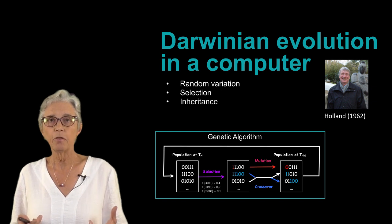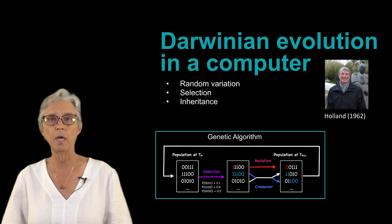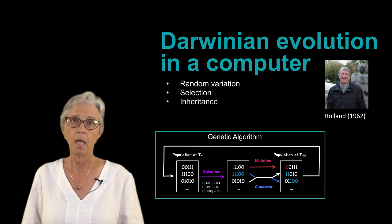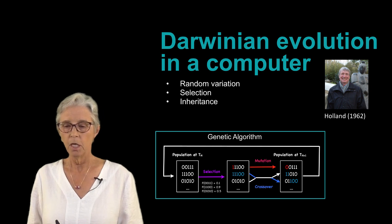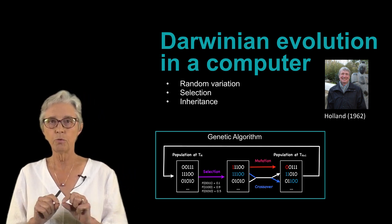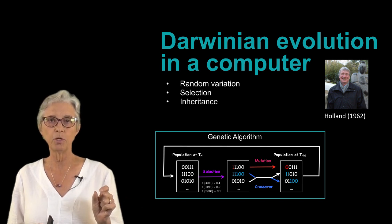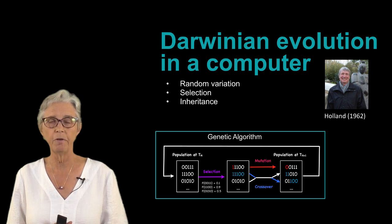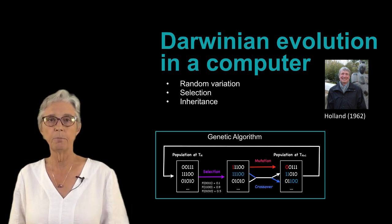So we're going to take those very simple elements and simple understandings and translate them into a computer algorithm. The way we're going to do that is instead of having chromosomes with genes on them, we're going to have strings with bits. Bits are numbers that are either 0 or 1—they can only have two values—and we're going to have those strings of bits be our individuals in the population.